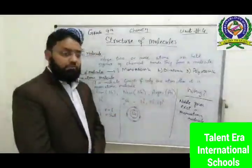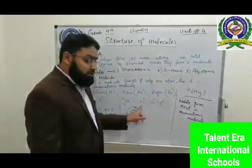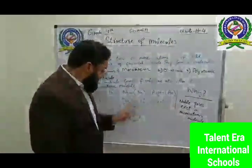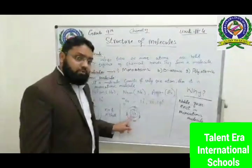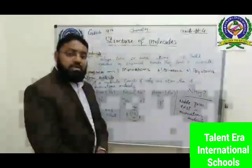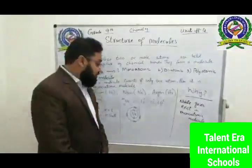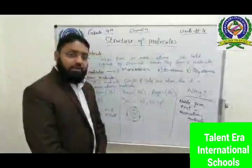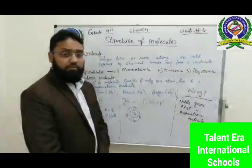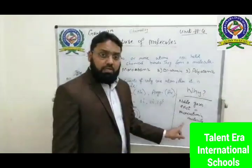The next example is neon. The atomic number of neon is 20, and its electronic configuration is 1s2 2s2 2p6. If we see the atomic structure of neon, in the first shell there are two electrons, and in the outermost shell of neon it contains eight electrons. Since it has eight electrons, its valence shell is completely filled, so it is again unable to react with other elements. That's why neon exists in monoatomic form.